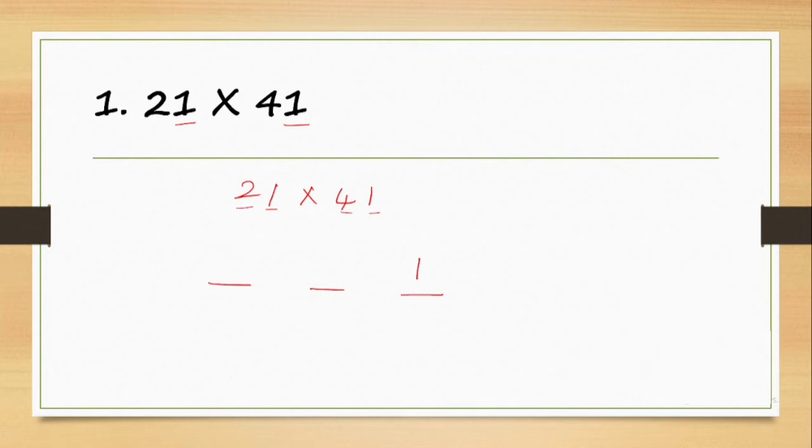Multiply 2 and 4. We get 8 for the first gap. So 2 times 4 is 8.